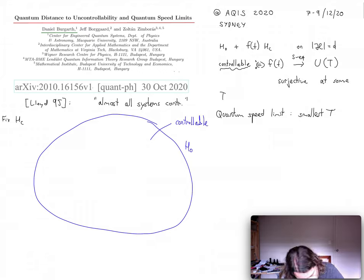There can be points at which the evolution is not controllable. For example, if you choose H0 equal to 0, then of course, if you integrate the Schrodinger equation, you'll just get a trivial direction of evolution in the direction of HC.